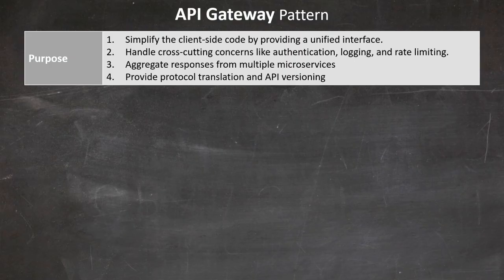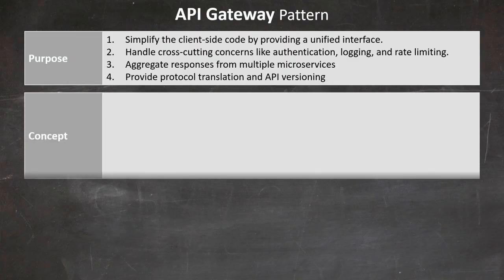Its primary purposes are: first, to simplify the client-side code by providing a unified interface; second, to handle cross-cutting concerns like authentication, logging, and rate limiting; third, to aggregate responses from multiple microservices; and fourth, to provide protocol translation and API versioning.